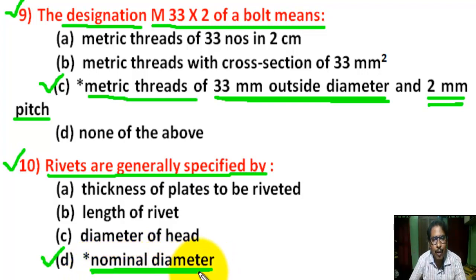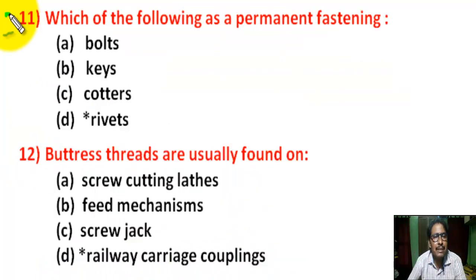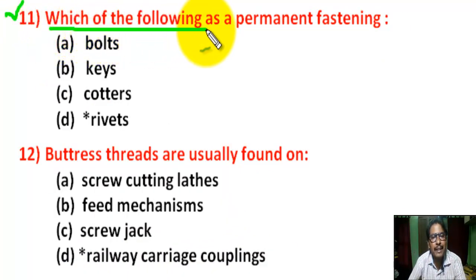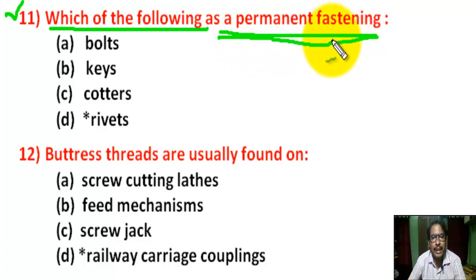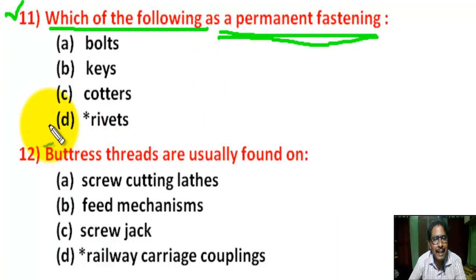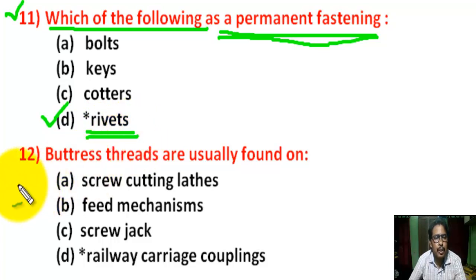Question number 11: which of the following is a permanent fastening? There are 4 options. Correct answer is D: Rivet.